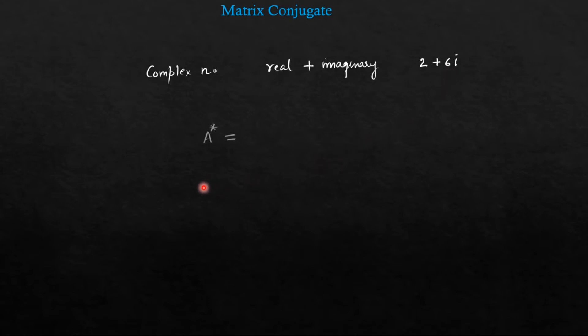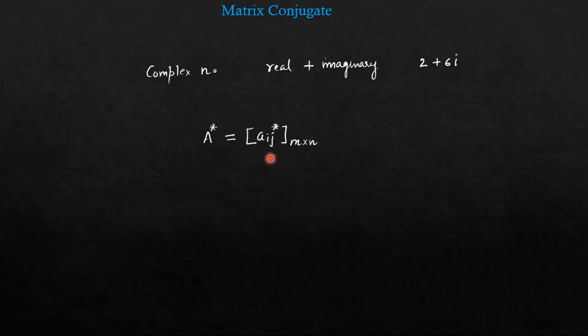Now if you take the conjugate of a matrix, that is A star — star is the sign of conjugate. Then you will have to take the conjugate of each and every element of the matrix.